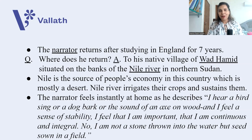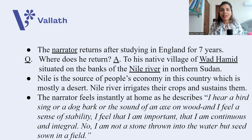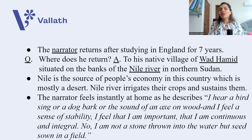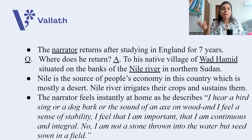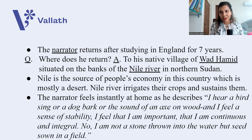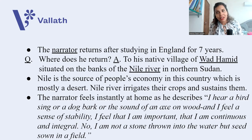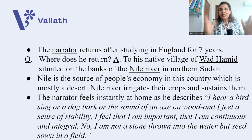The narrator returns after studying in England for seven years, doing his research on a writer. He returns to his native village of Wad Hamid, which is situated on the banks of the Nile River in northern Sudan. The Nile is described as a very important source of the people's economy, as Sudan is mostly desert. The Nile irrigates crops, provides agriculture for sustenance, and water for living. When the narrator returns to Wad Hamid from England, he instantly feels at home. His initial days in Sudan are very happy.